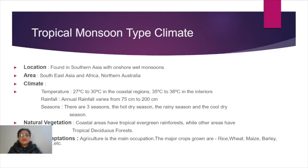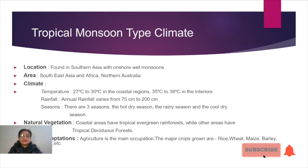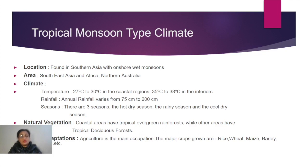Regarding the location of this tropical monsoon type climate — where it is found — especially in Southern Asia and Southeast Asia, those areas have this particular type of climate. Southeast Asia and especially northern Australia are the regions which get the direct influence of the monsoon winds.